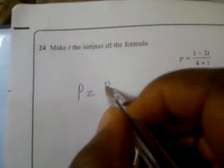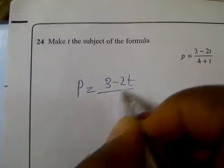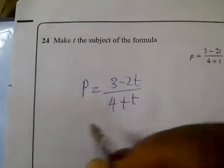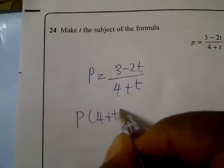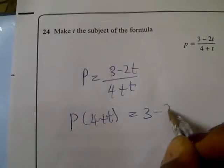We have P equal to 3 minus 2T over 4 plus T. Cross multiplying we have P into 4 plus T equal to 3 minus 2T.